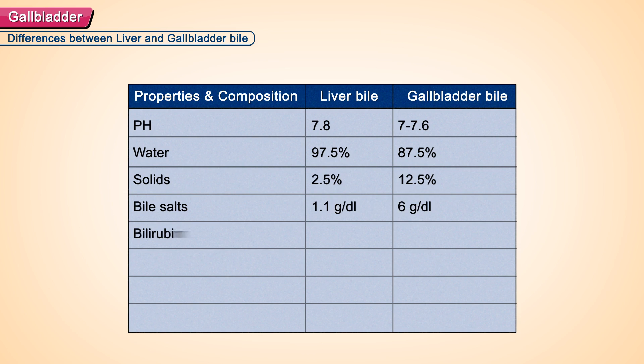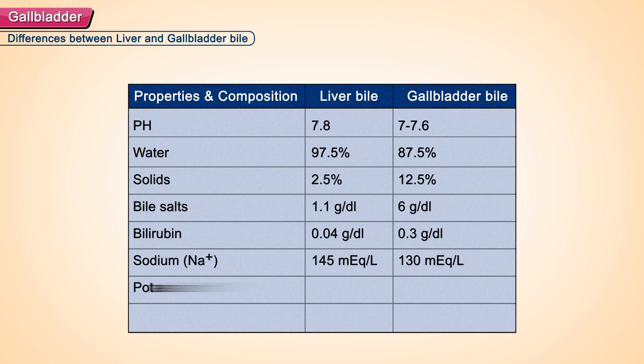Bilirubin is 0.04 grams per deciliter in liver bile, whereas it is 0.3 in gallbladder bile. Sodium is 145 mEq per liter in liver bile and 130 mEq per liter in gallbladder bile. Potassium is 5 mEq per liter in liver bile and 12 mEq per liter in gallbladder bile. Bicarbonate is 28 mEq per liter in liver bile and 10 mEq per liter in gallbladder bile.